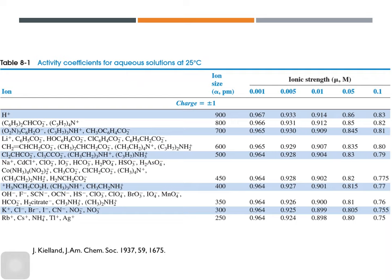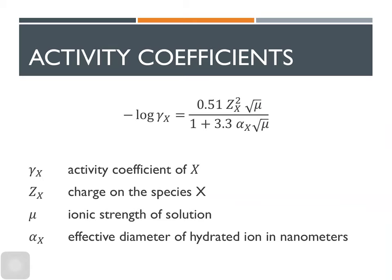What if your ionic strength is not 0.001, 0.005, 0.01, 0.05, or 0.1? What if your ionic strength is somewhere in between them or beyond that? You have no choice but to do this Debye-Hückel equation, but it's easy.